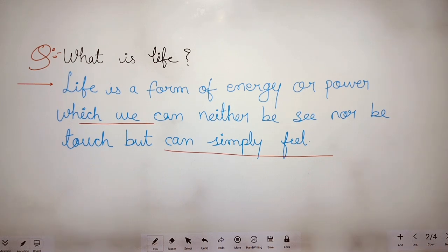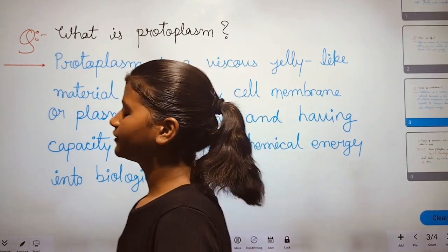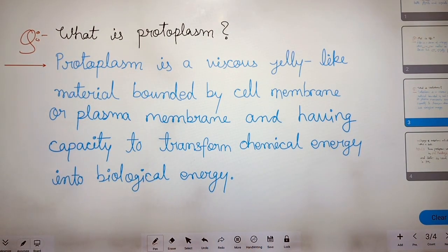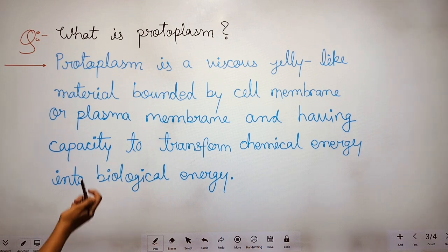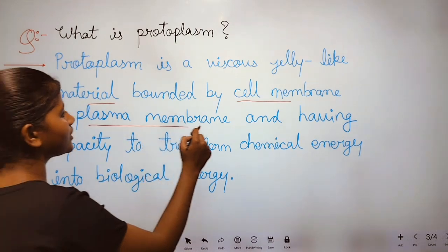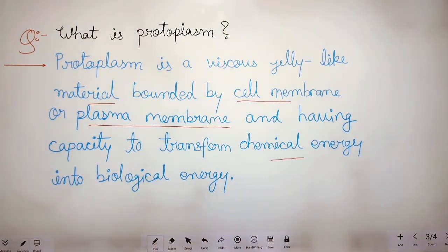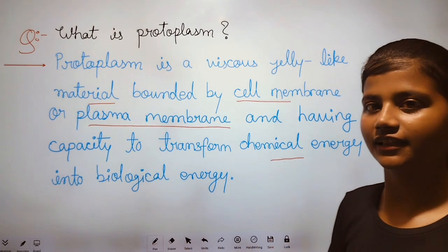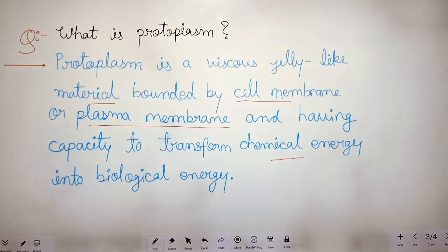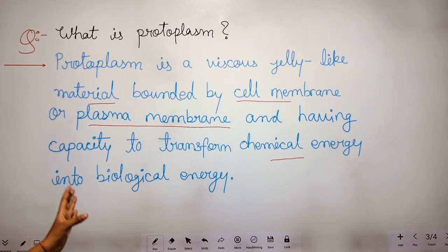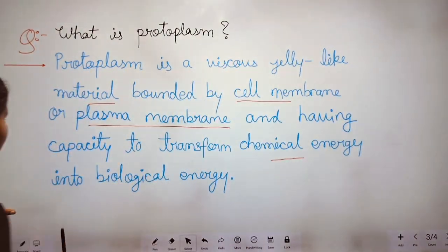Now let's see what is protoplasm. Protoplasm is a viscous jelly-like material bounded by cell membrane or plasma membrane, and having the capacity to transform chemical energy, like food, into biological energy.